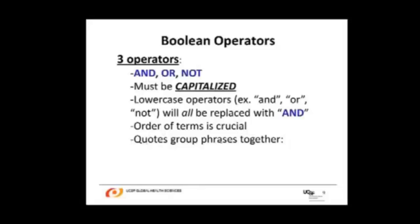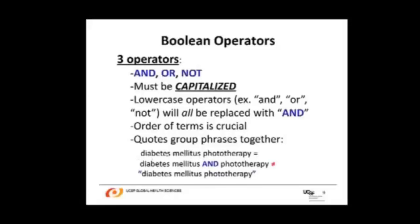You can use quotes to group a set phrase together. For example, if you want to search for a phrase like 'phototherapy diabetes mellitus' and these three words must go together, but if you enter these three words into PubMed without quotes, it will automatically insert the word AND between phototherapy and diabetes mellitus. That's not what you want. You want the three terms together in that order, so you must put quotes around those words.